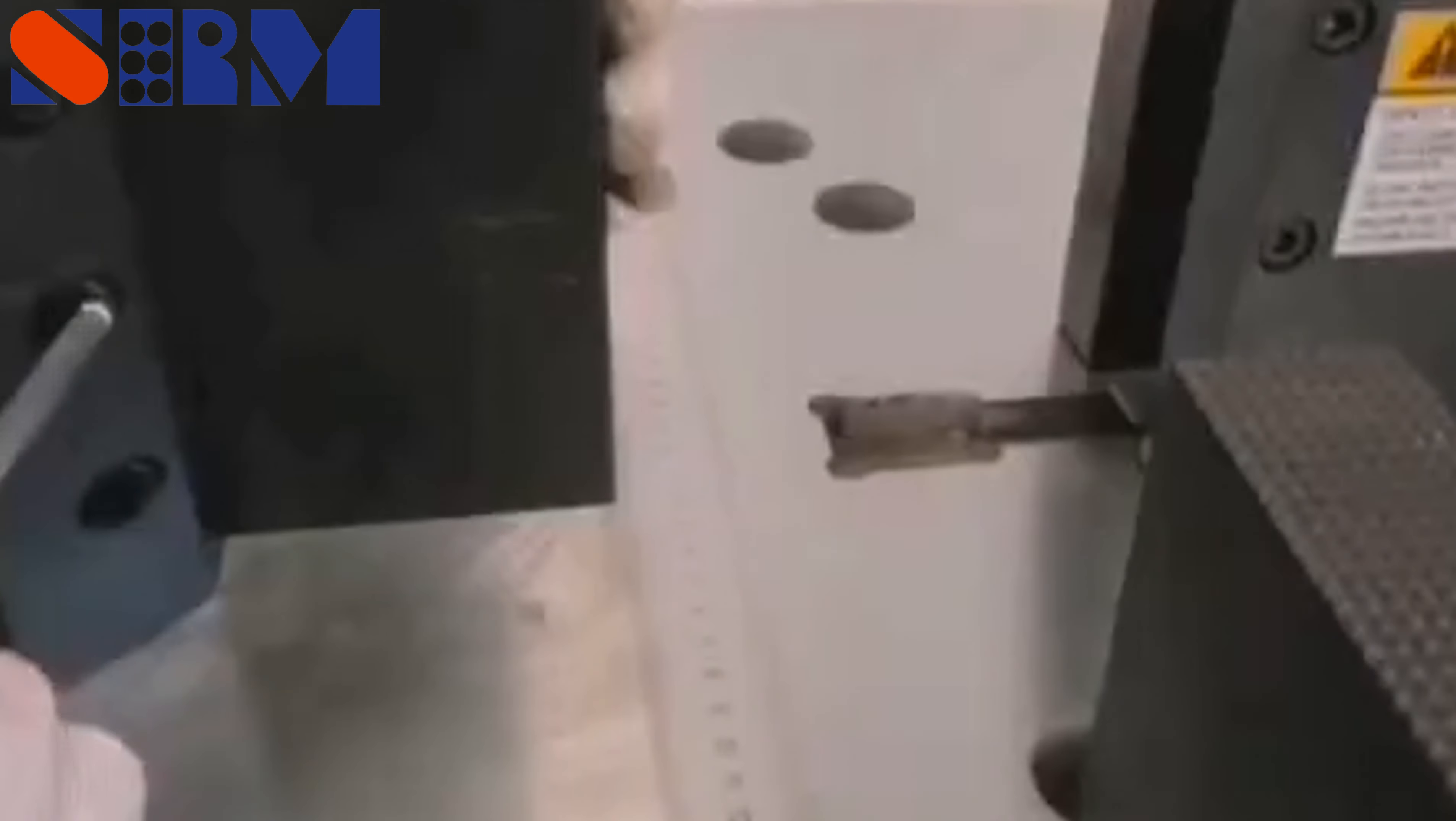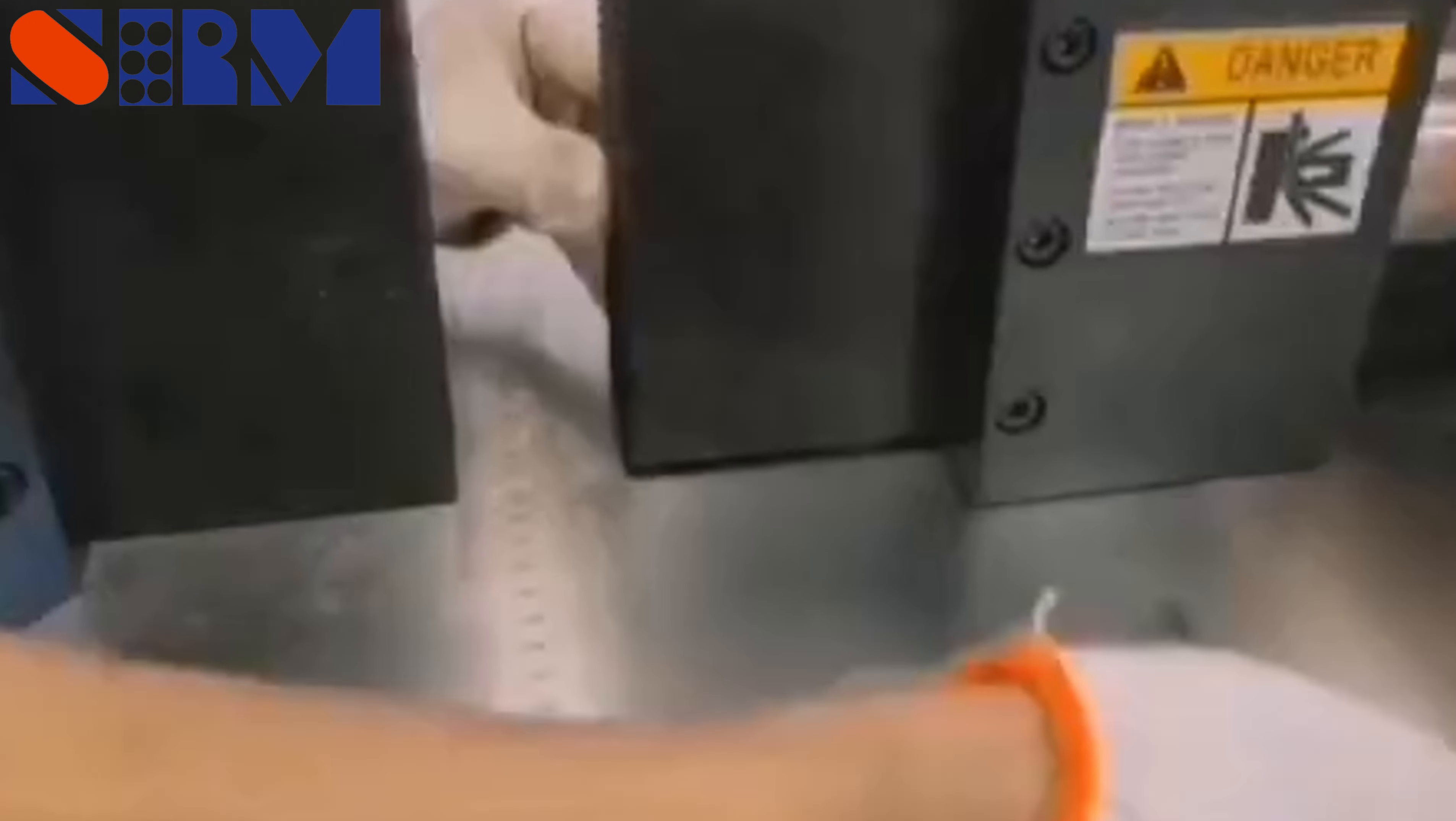Install the embossing mode. Put in the copper busbar, press the foot switch and start embossing.